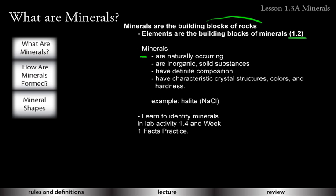Minerals are naturally occurring, inorganic, solid substances. Inorganic means that they're not made by living things normally. Just remember, that's how we try to classify minerals — oysters make shells out of calcium carbonate, which is also found naturally in an inorganic form. And they're solid as well. So water is not a mineral, but ice is a mineral.